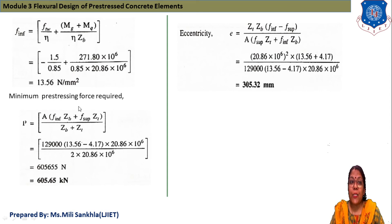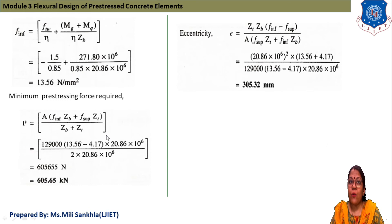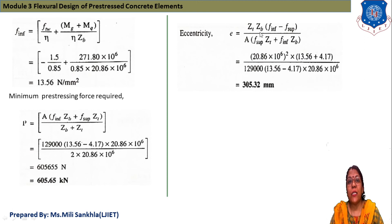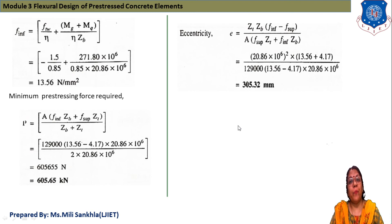Minimum prestressing force P = A·(f_inf·Z_b + f_sup·Z_t)/(Z_b + Z_t) = 605,650 N = 605.65 kN. Eccentricity e = Z_t·Z_b·(f_inf − f_sup) / (A·(f_sup·Z_t + f_inf·Z_b)) = 305.32 mm. This completes the I-girder example.